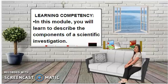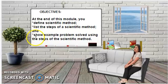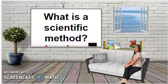The learning competency we follow throughout this discussion is to describe the components of a scientific investigation. Our objectives are: first, define scientific method; second, list the steps of the scientific method; and third, show an example problem solved using the steps of the scientific method.